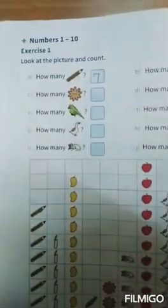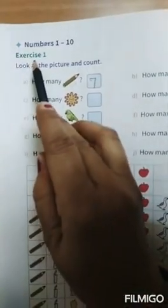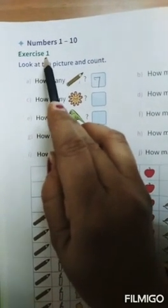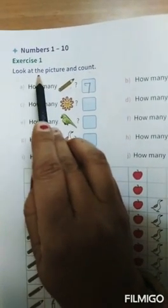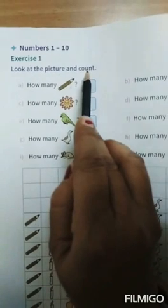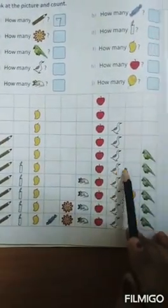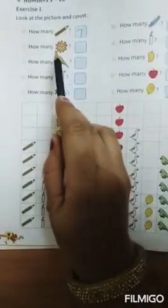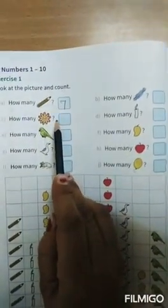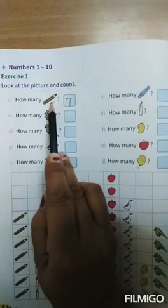Look at your book, Exercise Number 1. Look at the pictures and count. Here you see pictures. Look, we have to count them.